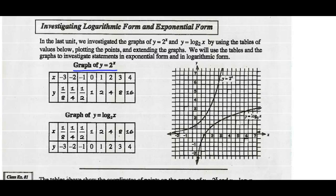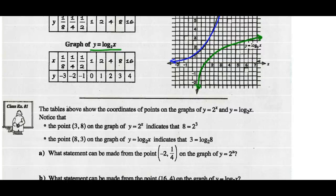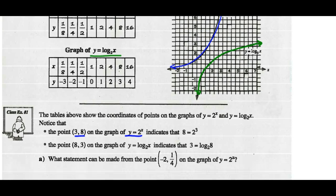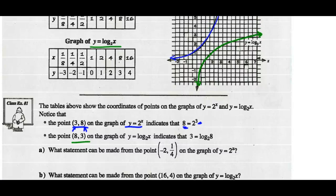The graph of y equals 2 to the x is given right here. The graph of y equals the log of x base 2 is given right here. We're told they're inverses of each other. Notice that the point (3, 8) on the graph of y equals 2 to the x — when x is 3, y is 8 — indicates that when y is 8, x is 3. So 2 cubed should equal 8. That's true. So the point (8, 3) on the graph of y equals the log of x base 2 is right here.